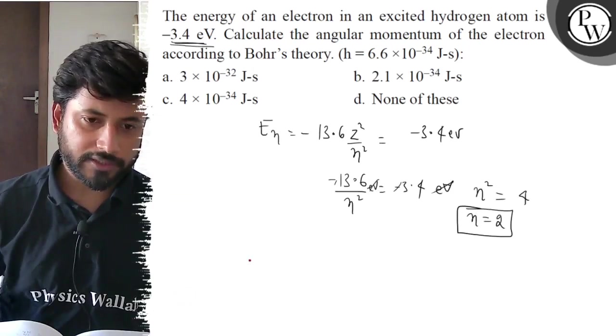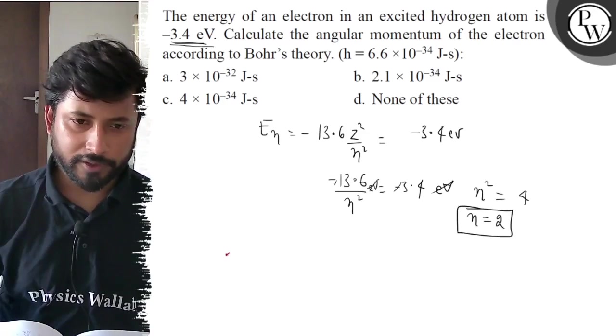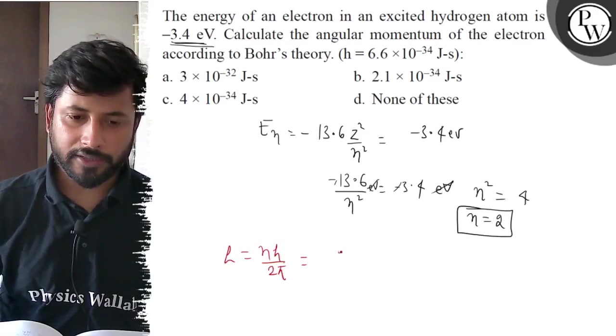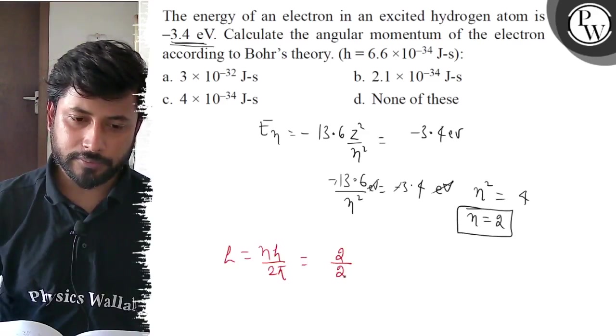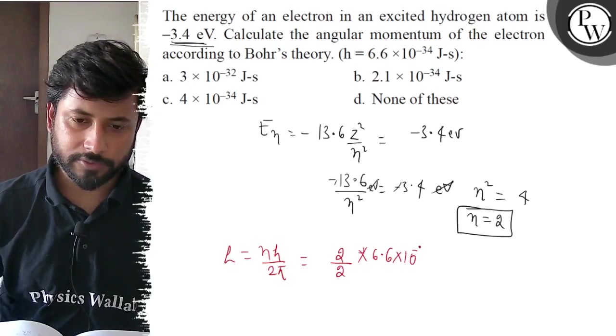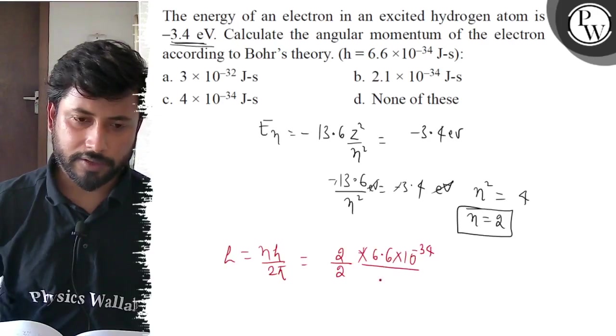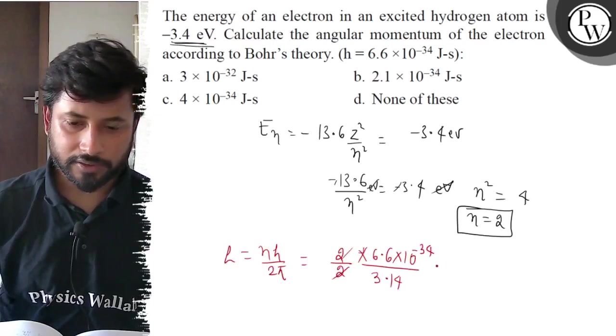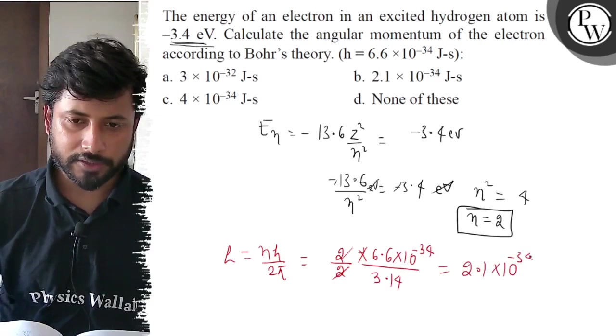Angular momentum L equals nh by 2π. When we substitute n = 2 and h = 6.6 × 10⁻³⁴ divided by 2π, the 2s cancel and we calculate to get 2.1 × 10⁻³⁴ J·s.